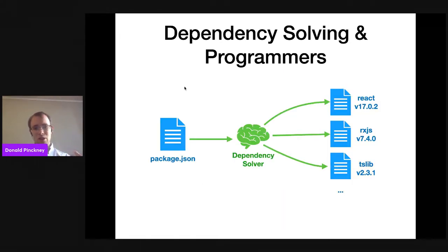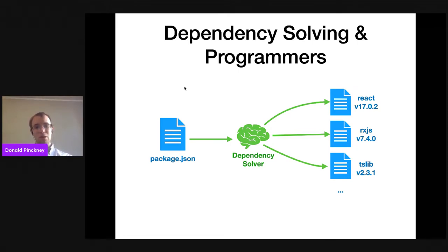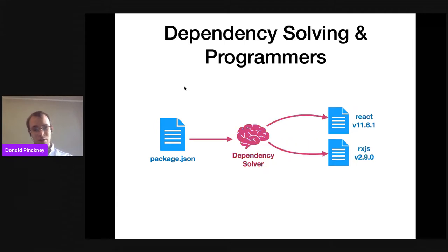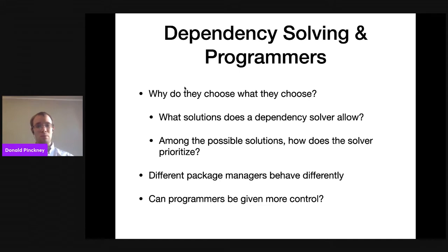In addition, the specifics of the dependency solver can affect the solution we get back. One dependency solver — like NPM's default — might give back one solution. But if you use YARN1 or YARN2 instead, you might get a different solution. You might have a more exotic dependency solver giving yet another solution. None of these are necessarily right or wrong compared to the others — they're just different choices. So this begs the question: why do dependency solvers choose what they choose?